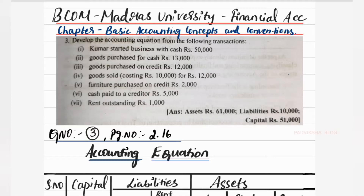Now we are going to do question number three. I will read the question first. Develop the accounting equation from the following transactions: (1) Kumar started business with cash ₹50,000; (2) Goods purchased for cash ₹13,000; (3) Goods purchased on credit ₹12,000; (4) Goods sold costing ₹10,000 for ₹12,000; (5) Furniture purchased on credit ₹2,000; (6) Cash paid to a creditor ₹5,000; (7) Rent outstanding ₹1,000.